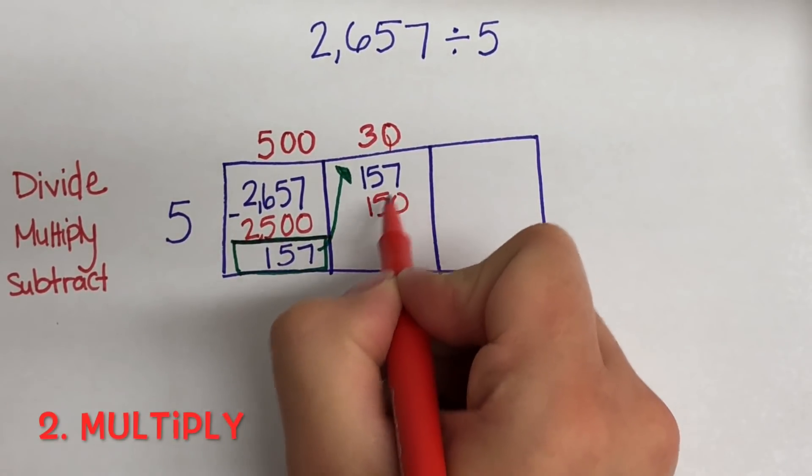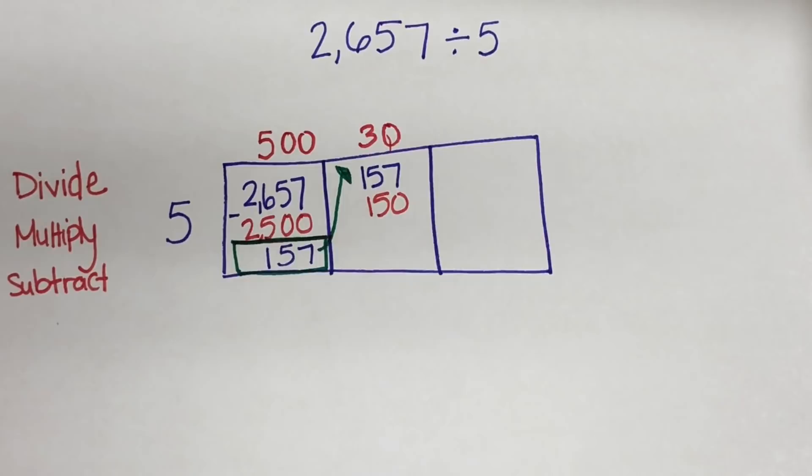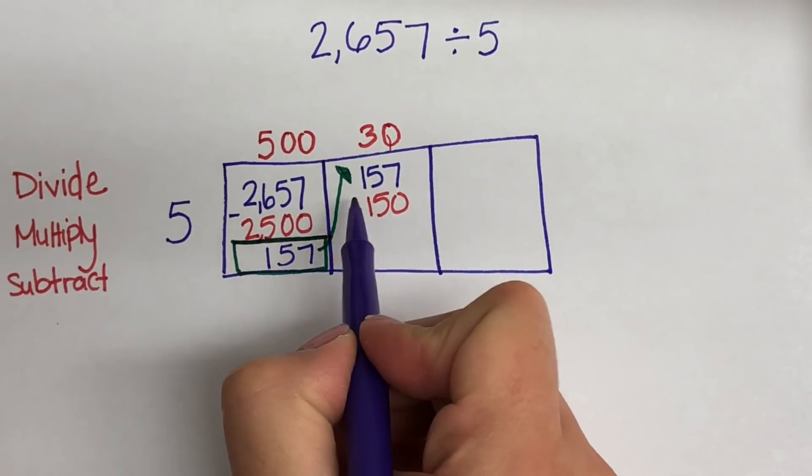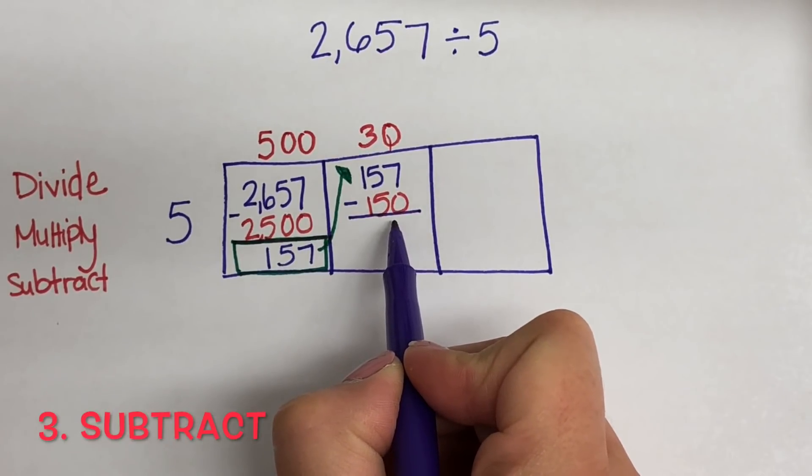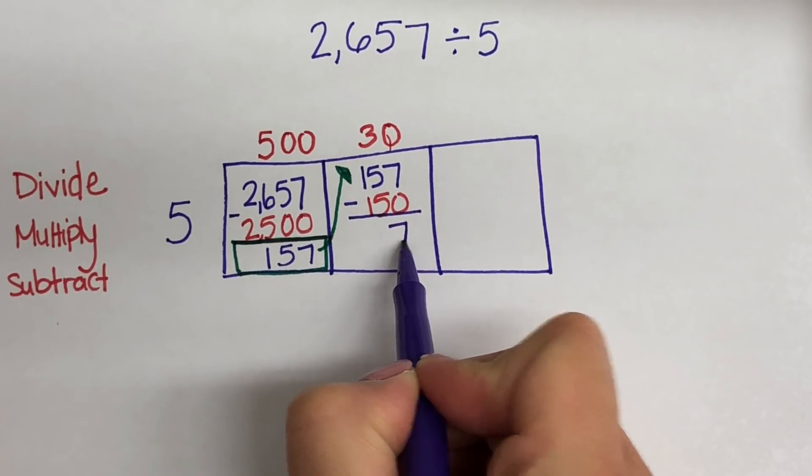Next here I am multiplying. 30 times 5 is 150, and then we subtract. So following the same steps. And now we have 7 left over.